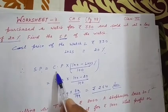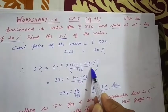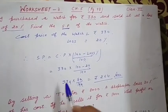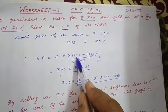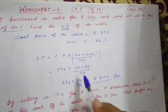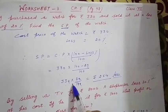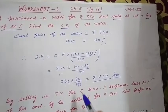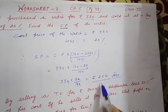SP निकालने का formula है: Cost Price × (100 − Loss%) ÷ 100। Values fill करते हैं: CP = ₹330, loss = 20%, तो 330 × 80 ÷ 100। 10 से 10 cancel होगा — answer आएगा ₹264।